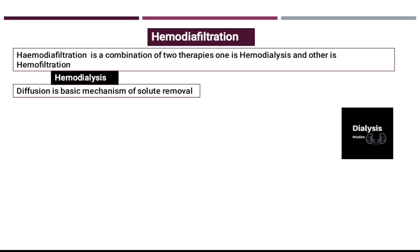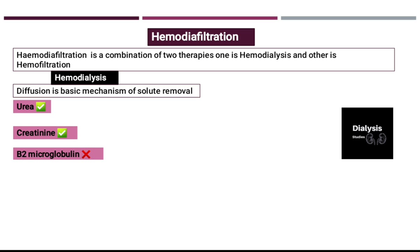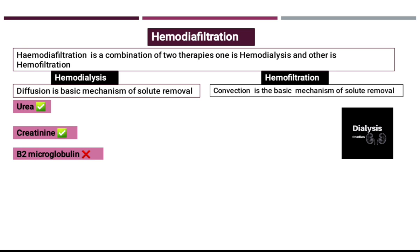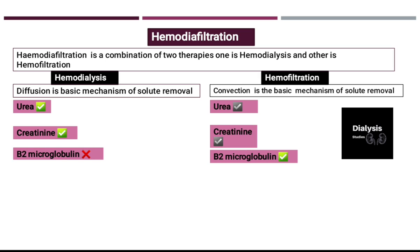By diffusion you can remove urea and creatinine, but you cannot remove beta-2 microglobulin. While in hemofiltration, the basic mechanism of solute removal is convection. By convection you can remove urea, creatinine, and also beta-2 microglobulin.